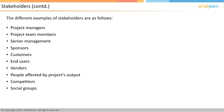Sometimes environmentalists or other social groups may become stakeholders. The government or political leadership may become stakeholders for projects in the public domain. There could potentially be hundreds of stakeholders for a large project. It is in the interest of the project manager and the project team to clearly identify all such stakeholders upfront and then actively manage them throughout the project.